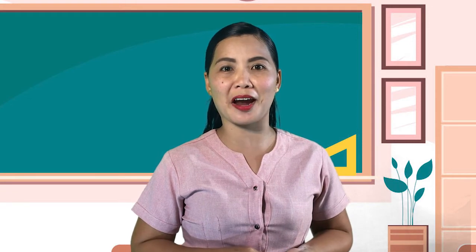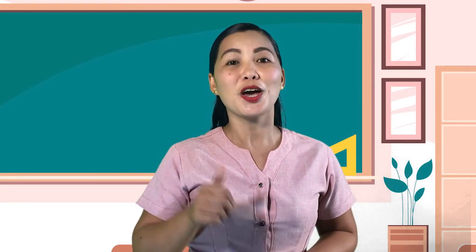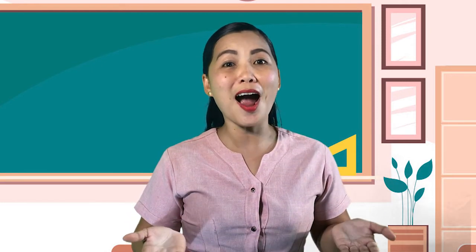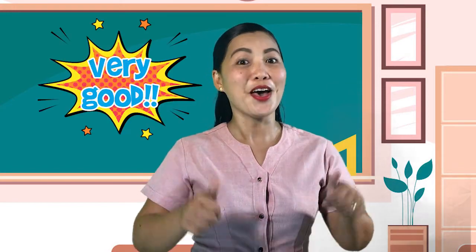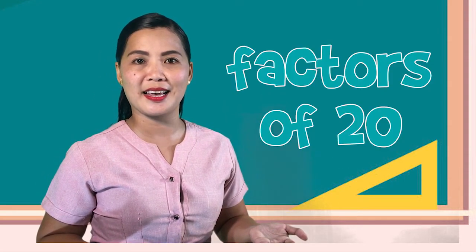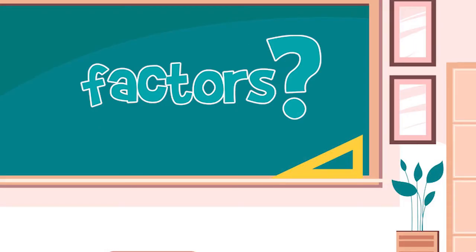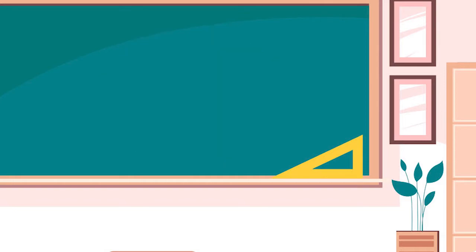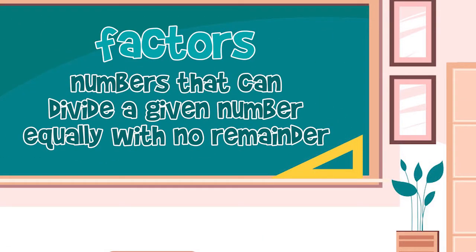In how many ways did mother share the chocolates with Anna's friends? There are 6 ways. What are the numbers that can divide 20 with no remainder? The numbers that can divide 20 with no remainder — these are the factors of 20. So, what are factors? Factors are the numbers that can divide the given number equally with no remainder.